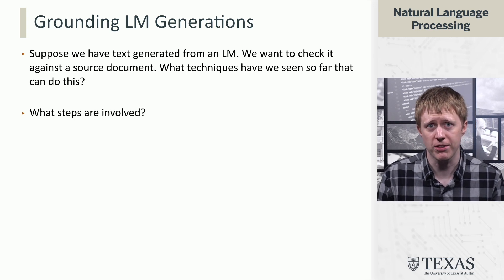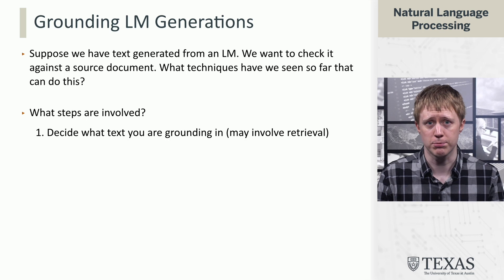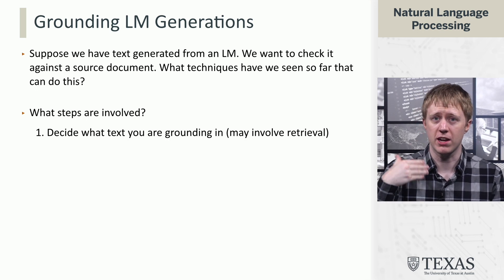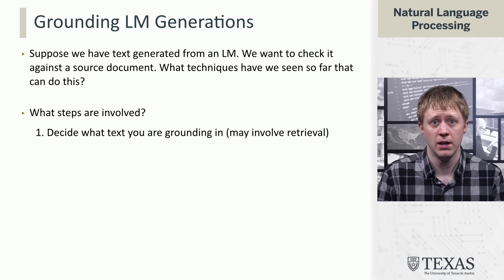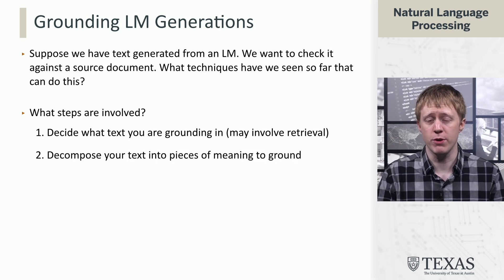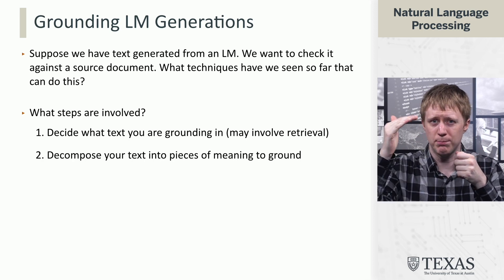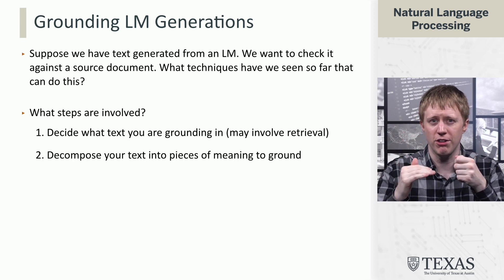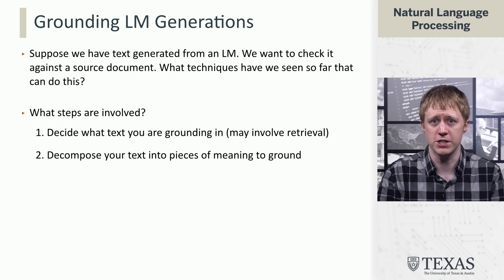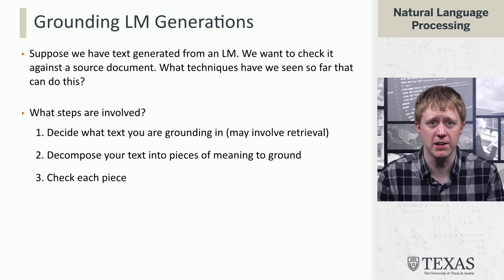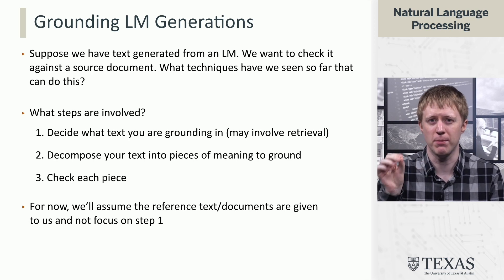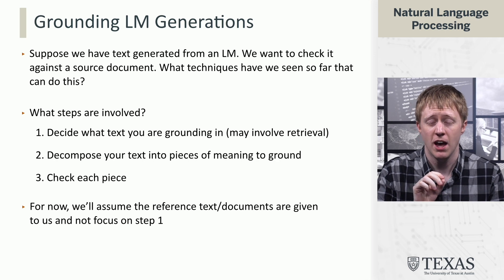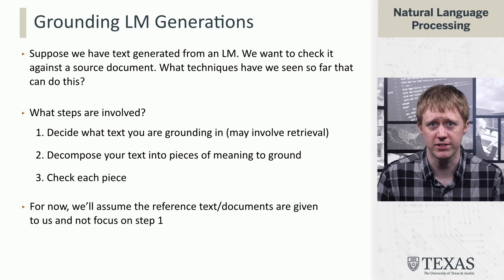We're going to think about there being a few steps in this process. The first is figuring out what the source document is, which may involve something like information retrieval. The second is saying, if we get some long response out of ChatGPT, how are we going to break that down and figure out all the individual things that need to be checked? And then the third piece is actually checking each of these. We're going to skip step one for now and assume that someone gives us the reference text or documents.